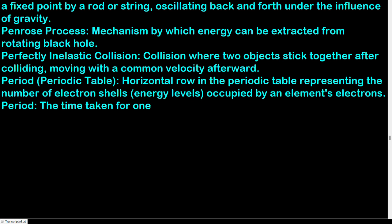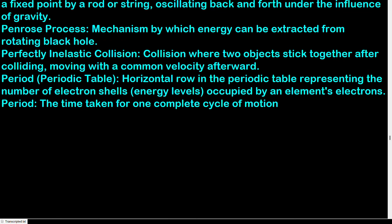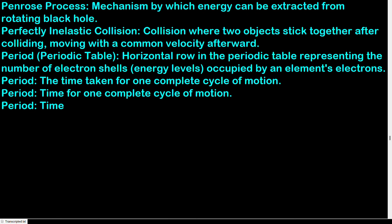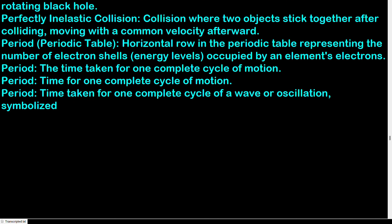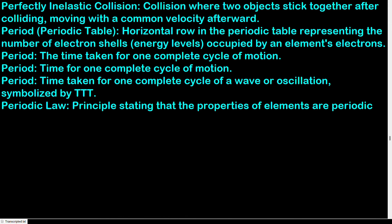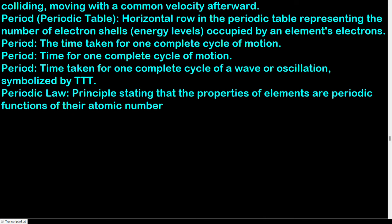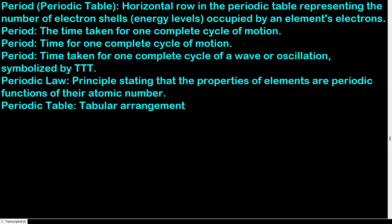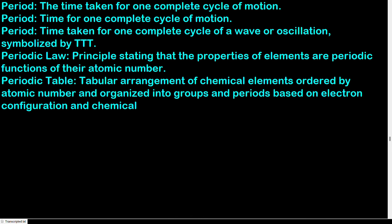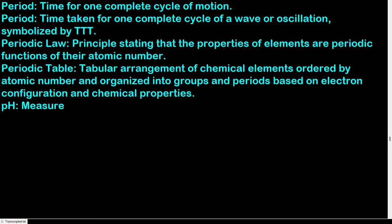Period: time taken for one complete cycle of a wave or oscillation, symbolized by T. Periodic law: the properties of elements are periodic functions of their atomic number. Periodic table: tabular arrangement of chemical elements ordered by atomic number, organized into groups and periods based on electron configuration and chemical properties.